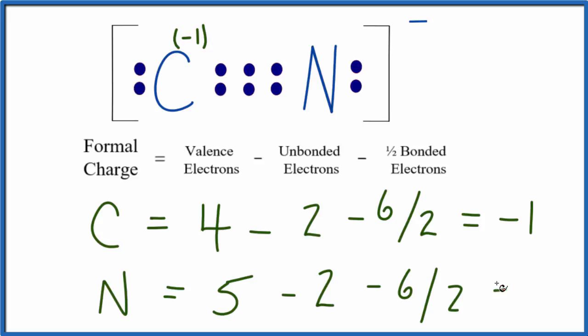So we have 5 minus 2 is 3, minus 3 is 0. The formal charge on the nitrogen is 0, and it makes sense that we have a -1